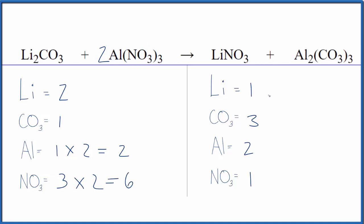So I could have started by balancing the lithiums, but then I'd have to change that number because I'd have so many nitrates over here. So now I see I have six nitrates and only one here. So let's put a six in front of the lithium.